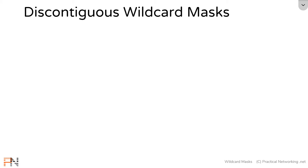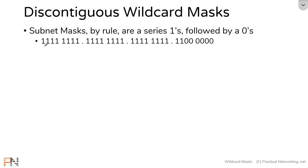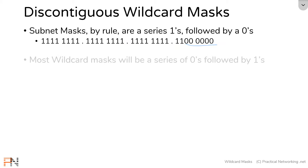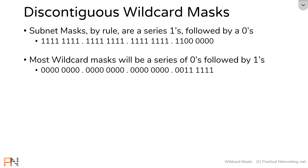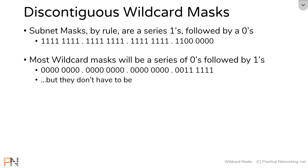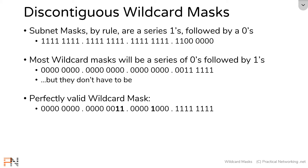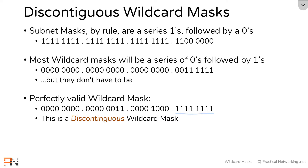To quickly define that: recall that subnet masks are a series of ones followed by a series of zeros, and typically most wildcard masks you encounter are going to be the opposite — a series of zeros followed by a series of ones. But they don't have to be. You can absolutely have alternating sets of zeros and ones in your wildcard mask. This is what's known as a discontiguous wildcard mask, and this is the thing that's impossible to do with subnet masks.